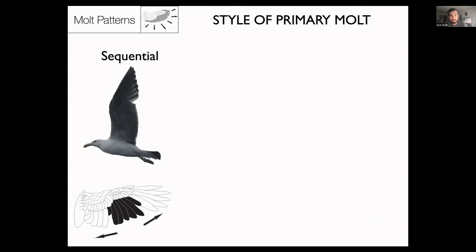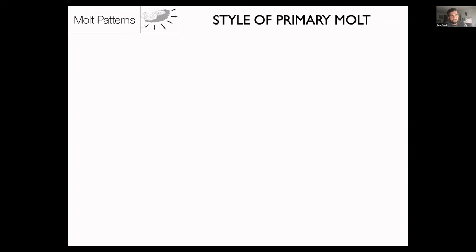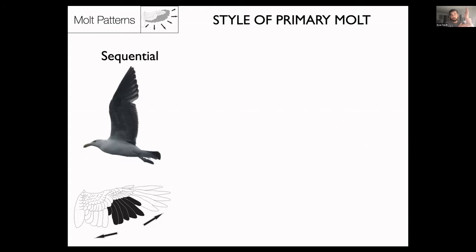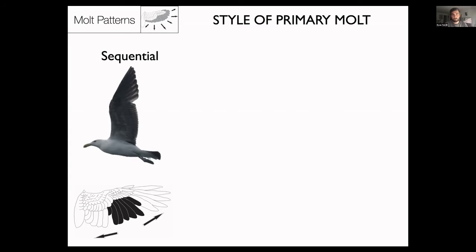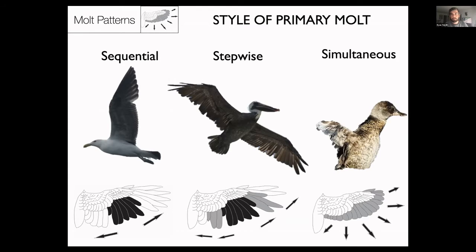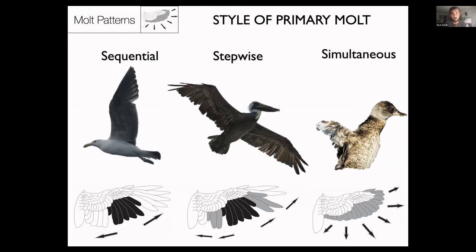The key here may be their style of primary molt. The most common style is sequential molt, where birds molt one feather at a time going out through the primaries, so they maintain flight ability. About 3% of all species do simultaneous or synchronous wing molt, where they molt all their wing feathers at once and completely lose the ability to fly during molt. Examples include grebes, loons, rails, ducks, geese, and swans. Snow geese do this, and there's a paper called 'Techniques for Mass Capture of Flightless Blue and Lesser Snow Geese' — the technique is just to put a fence around them, because they can't escape during molt.